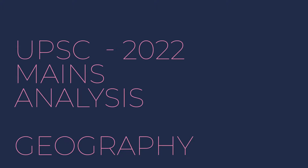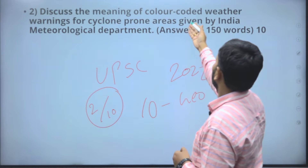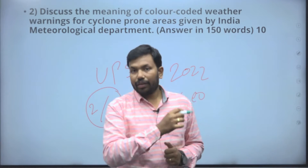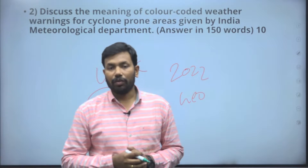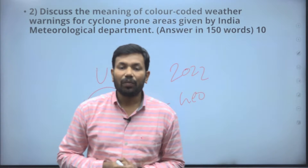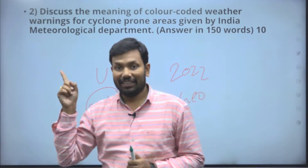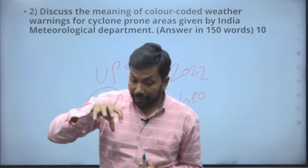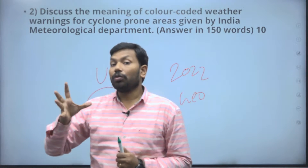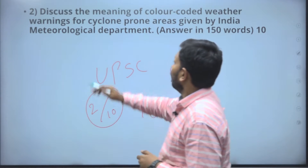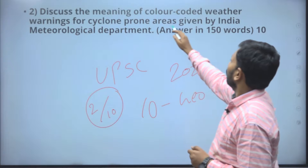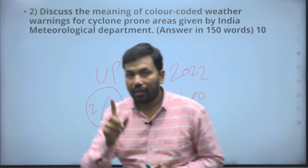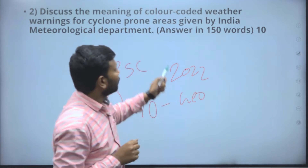The second question asks: discuss the meaning of color-coded weather warnings for cyclone-prone areas. Note that weather warnings is a meteorological and geography topic, not a climate change topic — please know the difference. The question is asking about cyclone-prone areas in India.